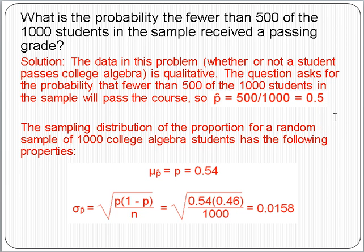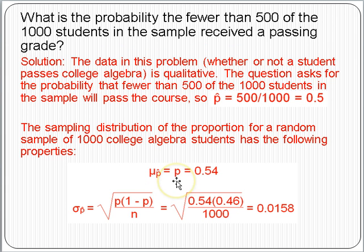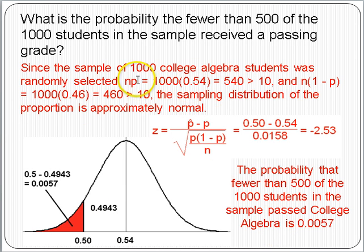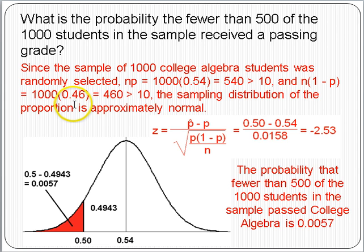The sampling distribution of the proportion for a sample of 1,000 students has the following properties. The mean of the sampling distribution is equal to the population proportion, 0.54. The standard deviation of the sampling distribution, using the equation, is 0.0158. Since the sample of 1,000 students was randomly selected, n times p is 1,000 times 0.54, which equals 540, bigger than 10. And n times 1 minus p is 1,000 times 0.46, which equals 460, also bigger than 10. So the sampling distribution is approximately normal.